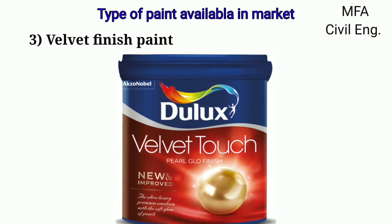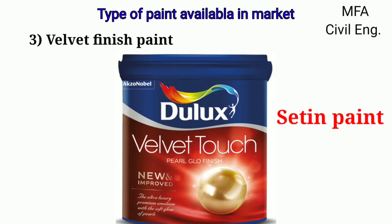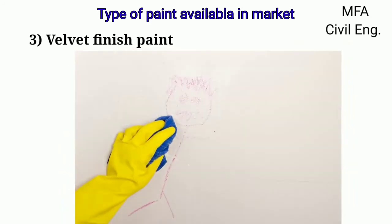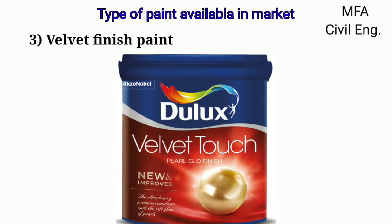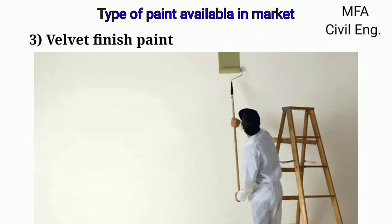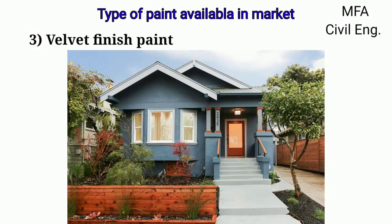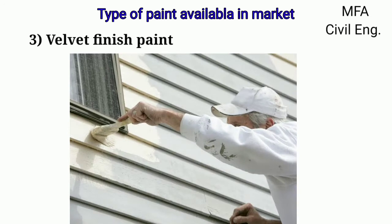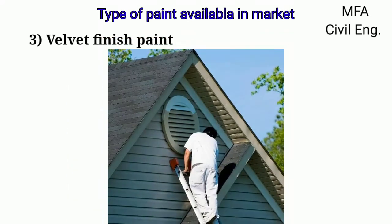Velvet finish paint are not too shiny and are perfect to cover up defects. These paints are also termed as satin paint in the market. These paints are washable, so any dirt or stain can easily be wiped away from the surface. Velvet finish paint are ideal for surfaces like machinery, brick wall, stucco, wood siding, aluminum siding, and vinyl siding.